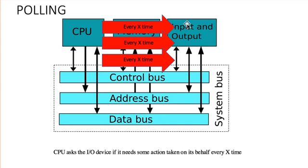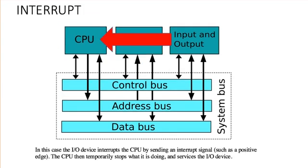Then we have interrupt, and the interrupt is actually the opposite. Instead of having the CPU all the time asking input and output, we have the I/O device that asks with an interrupt signal for the CPU to interrupt whatever they were doing and handle that specific instruction.